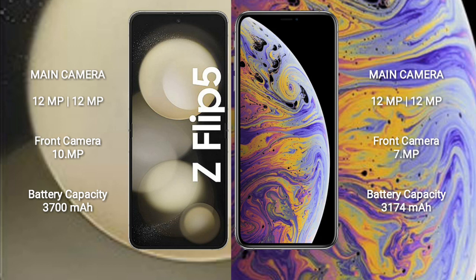The Samsung Galaxy Z Flip 5 features a dual camera setup with 12 megapixel plus 12 megapixel rear cameras and a 10 megapixel front camera. The iPhone XS Max also features a dual camera setup with 12 megapixel plus 12 megapixel rear cameras and a 7 megapixel front camera.